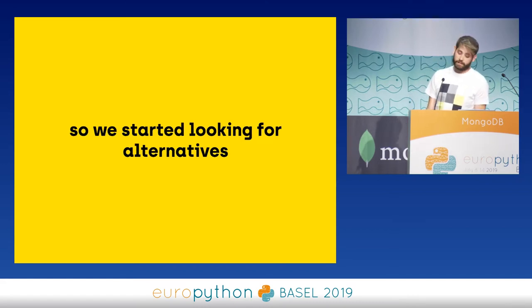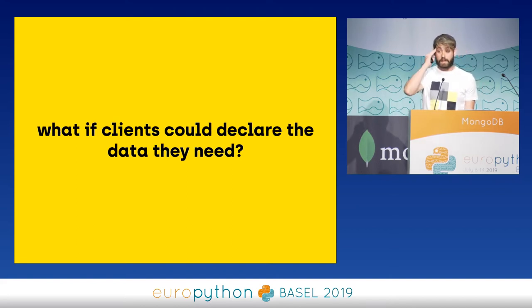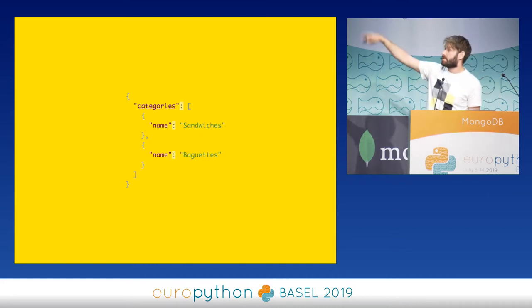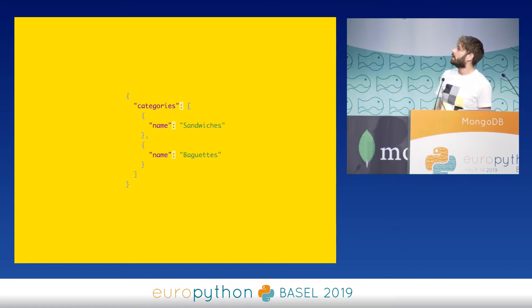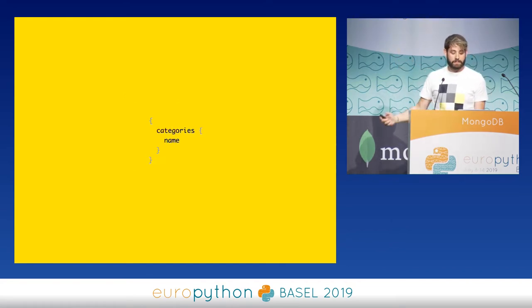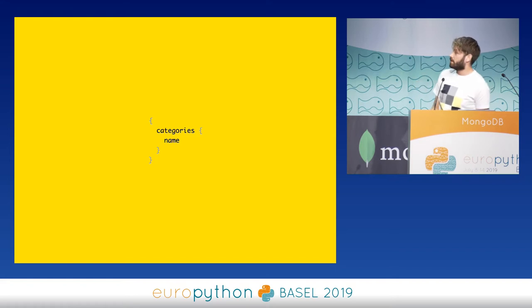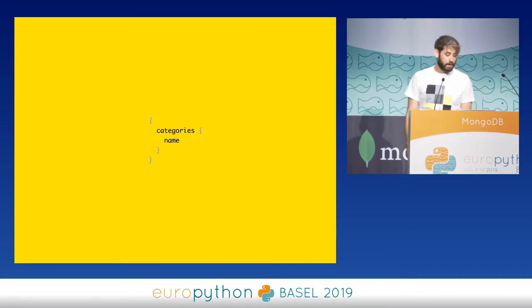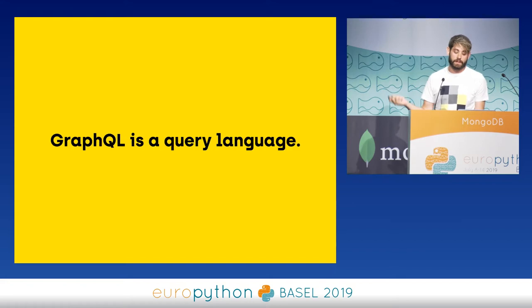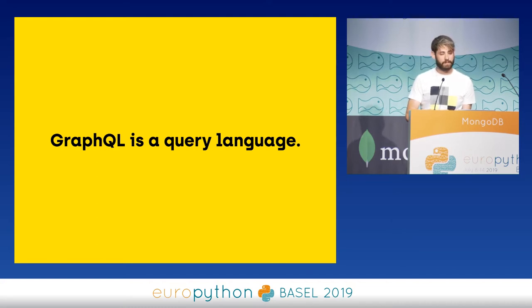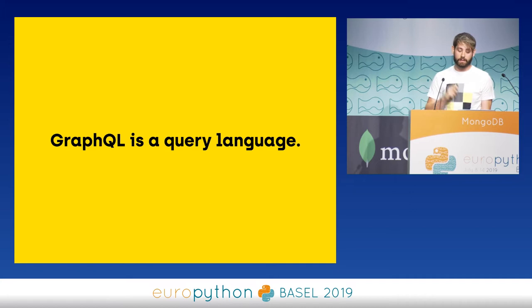So we started looking for alternatives, thinking: what if clients could declare the data that they need? So if we have a client that needs a list of categories and for each category just a name, we could send a document saying 'I need the category and the name' — basically like JSON but without the values — send it to the backend, and the backend responds with exactly that. This is basically what GraphQL is. GraphQL is a query language created by Facebook in 2012 and released as open source in 2015, now used in production by Twitter, GitHub, Reddit, and many others.